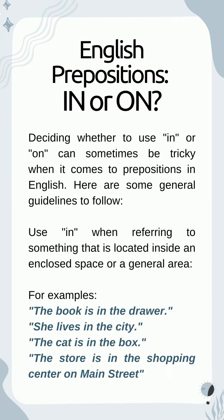Deciding whether to use 'in' or 'on' can sometimes be tricky when it comes to prepositions in English. Here are some general guidelines to follow. Use 'in' when referring to something that is located inside an enclosed space or a general area. For example: the book is in the drawer; she lives in the city; the cat is in the box; the store is in the shopping center on Main Street.